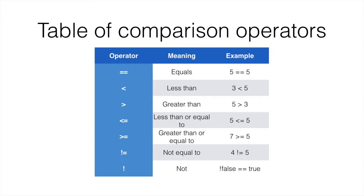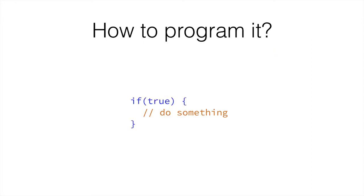Let's take a look at how we could program this. In the next video, we can actually go through the programming environment and try. If something is true, we do something. We have the keyword if as part of the Java language. Then, between two brackets, we have the comparison — or in this case, the true keyword. Then, between two curly braces, we do whatever we want to do if the if statement is true.